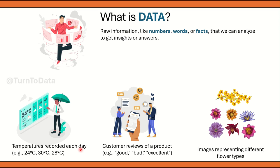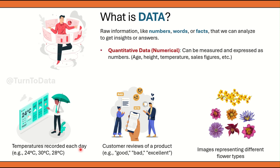There are loads and loads of examples out there. Now data can be categorized into two types. The first type is qualitative data, that is numerical data — it is something that can be measured and expressed as numbers. For example, age, height, temperature, sales figures, etc.